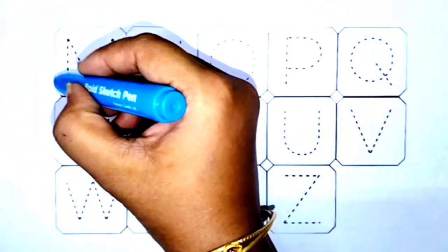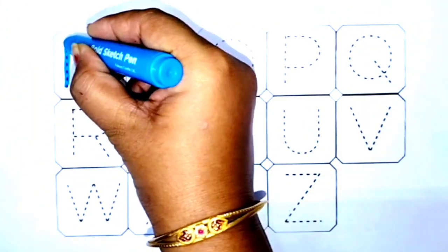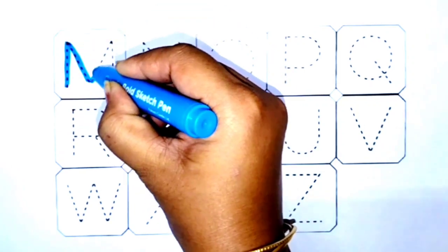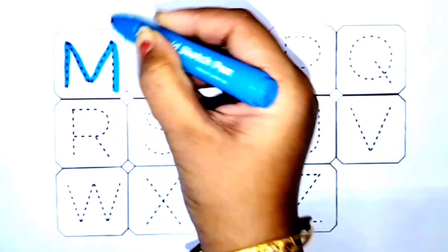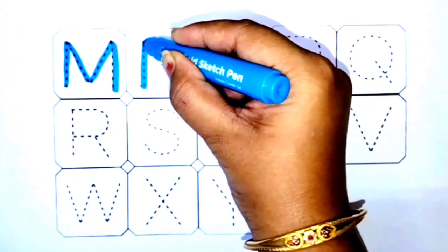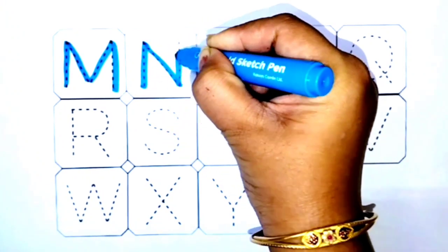Sky blue color: M for mango, N for nest.